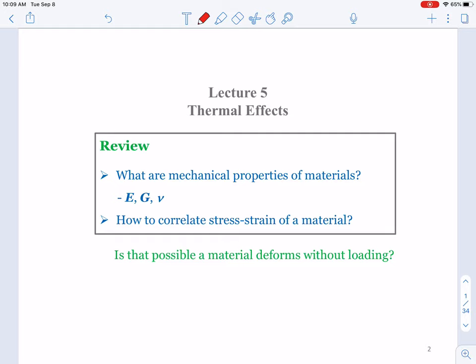Apart from that, we also defined several mechanical properties of materials: E, G, and ν—the modulus of elasticity, modulus of rigidity, and Poisson ratio.